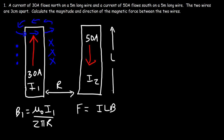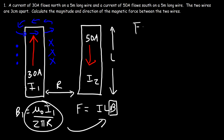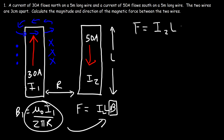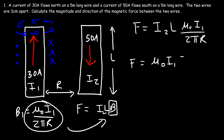Replacing B with its expression, the force on the second wire is F = I2 times L times B, where B = mu zero I1 over 2 pi r. So the magnetic force acting on each wire is F = mu zero I1 I2 L divided by 2 pi r, where r is the distance between the two wires and L is the length of each wire.